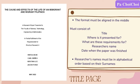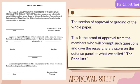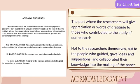Researchers' names must be in alphabetical order based on their surnames. The approval sheet is the section of approval or grading of the whole paper. It is proof of approval from the members who will prompt questions and give the researchers a score — the defense panel, or what we call the panelists.